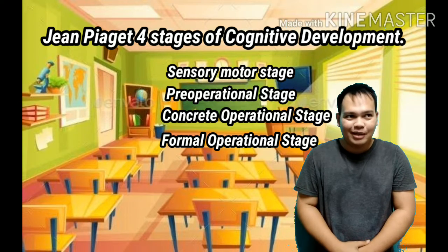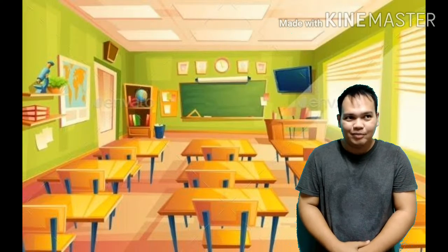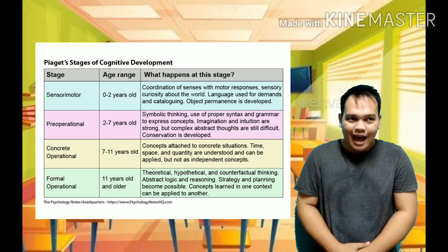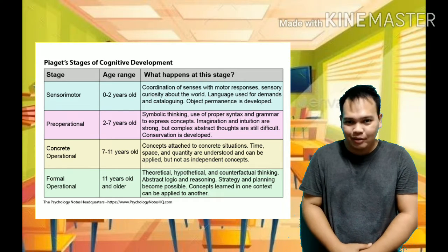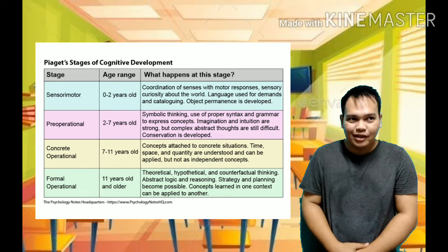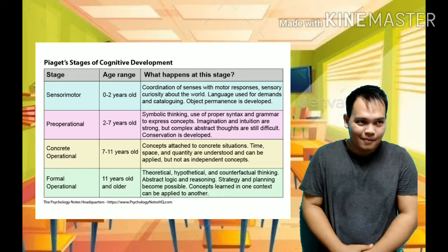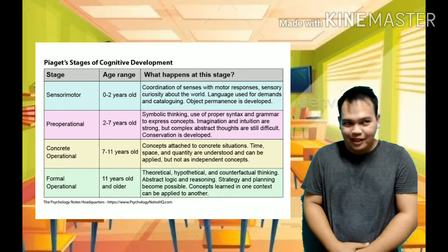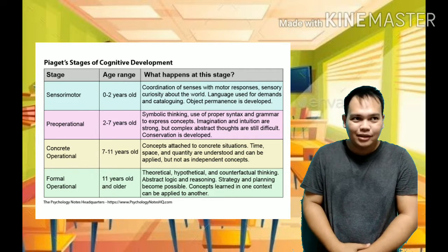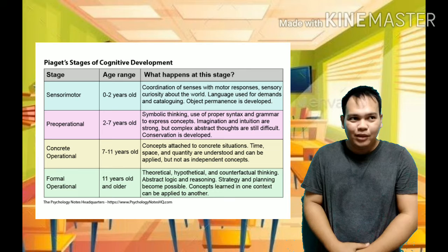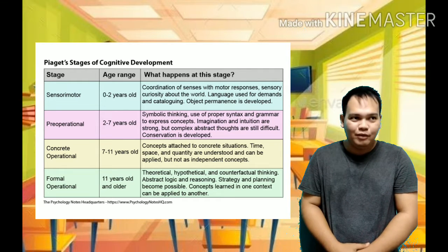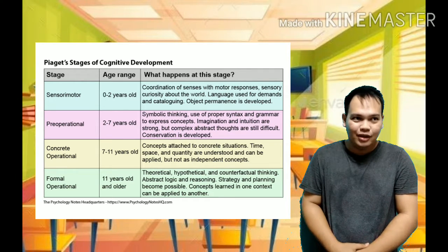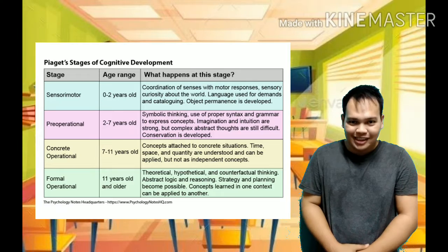Piaget believed that children take an active role in the learning process, acting much like little scientists as they perform experiments, make observations, and learn about the world. As kids interact with the world around them, they continually add new knowledge upon existing knowledge and adapt previously developed ideas to accommodate new information.